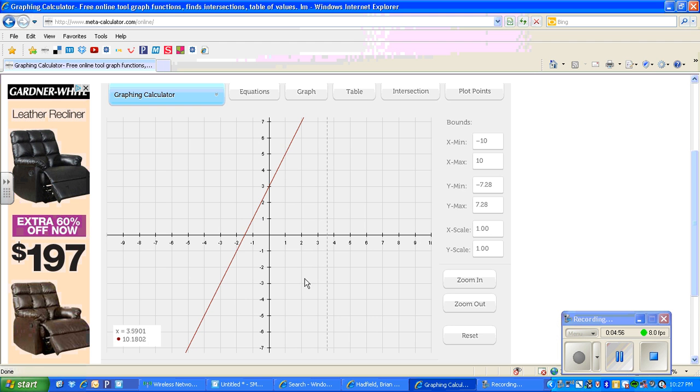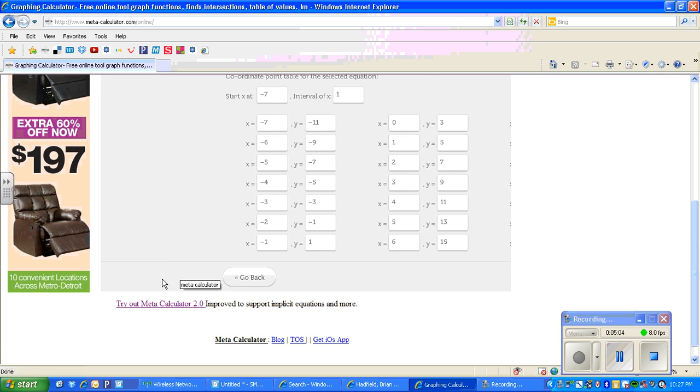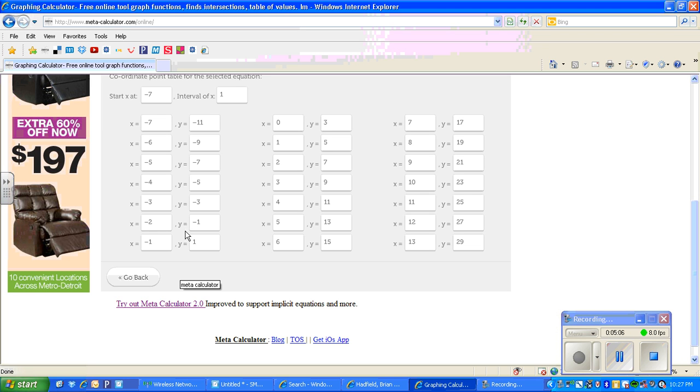But better than even the graph of the line is to look at the table of values. I'll scroll down a little bit here, create table. And I can see that here for negative 2, they have negative 1 for y. So we have negative 2, negative 1, 0, 3, and 2, 7. So it should match up what I have.